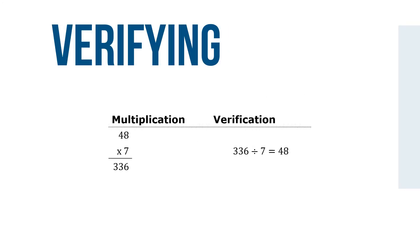To check your multiplication for accuracy, divide the product by the multiplier. If the multiplication was correct, this will yield the multiplicand. For example, use a table like this.